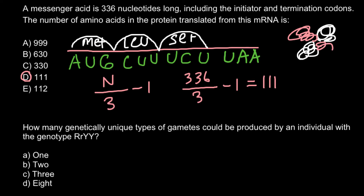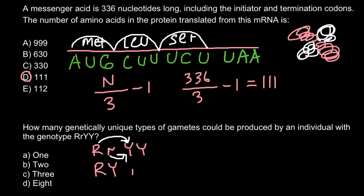The next question: how many genetically unique types of gametes could be produced by one individual with the genotype capital R, small r, capital Y, capital Y? It is very easy to predict that the number of gametes would be two: the first variant is capital R and capital Y, and the second variant is small r and capital Y.